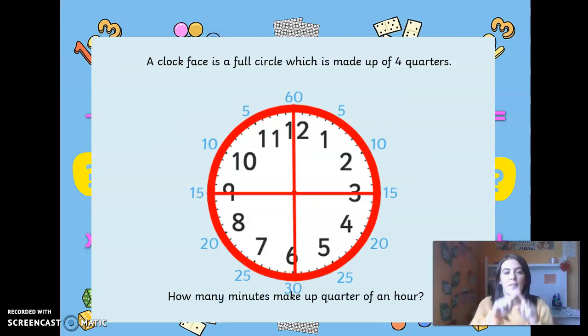A clock face is a full circle which is made up of four quarters. How many minutes make a quarter of an hour? As you can see, we've got the four, this is one quarter here. So looking at it, we need to find out how many minutes are in this quarter.